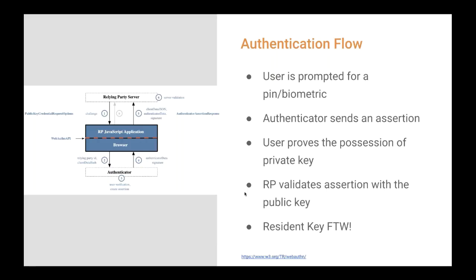In the authentication flow, the user makes a request to log in, where they are prompted to provide a PIN or biometric. This triggers the authenticator to send an assertion proving that the user possesses the private key. The relying party then validates the assertion with the public key, allowing the user to log in upon successful validation. The most important factor enabling passwordless authentication with FIDO2 is the concept of the client-side resident public key credential source — or the resident key — which is stored in the authenticator instead of being encrypted and stored on a server.